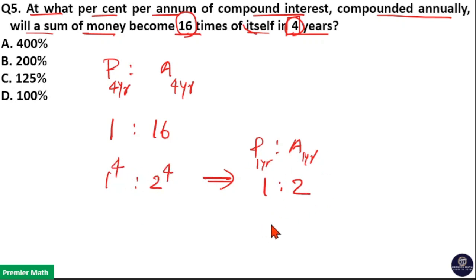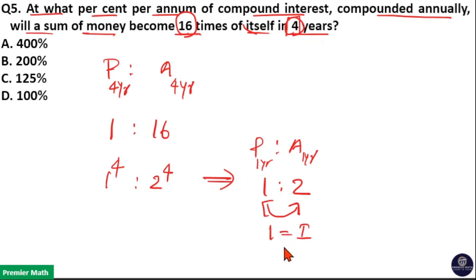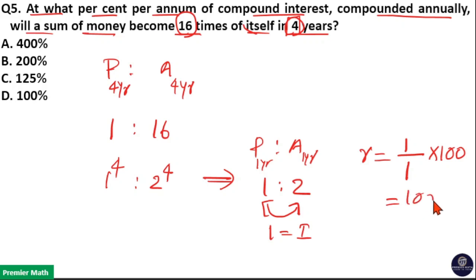So 1 to 2 is the principal and amount — that is, principal 1 becomes 2 at the end of 1 year. The difference between amount and principal is 2 minus 1, which equals 1 unit. So 1 unit is the interest received at the end of 1 year. Interest received is 1 out of 1 unit principal. Converting to percentage, multiplied by 100, this becomes 100%. So option D — 100% — is the answer.